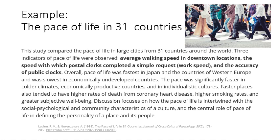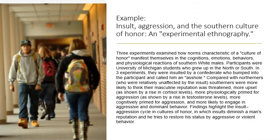It's structured because they're looking only for certain things indicative of pace of life. Another example is 'Insult, Aggression, and the Southern Culture of Honor.' Three experiments examined how norms of a culture of honor manifest in cognitions, behaviors, and reactions of Southern white males. Participants were University of Michigan students who grew up in the North or South. In three experiments, they were insulted by a confederate who bumped into the participant and called him an asshole. Compared with Northerners, Southerners were more likely to think their masculine reputation was threatened, were more upset, more physiologically primed, more primed for aggression, and more likely to engage in aggressive and dominant behavior.